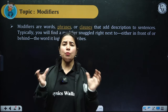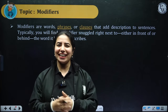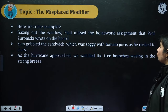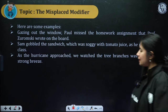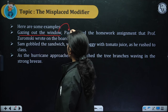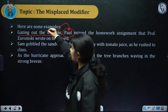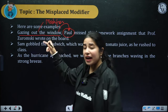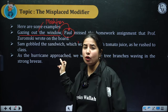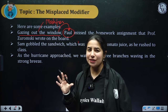I'll give you some examples. Usually, a modifier is kept near — nazdik — the word or phrase it is trying to explain or modify. Modifier ka placement usi word ke nazdik hota hai. For example: 'Gazing out the window, Paul missed the homework assignment that Professor Zurmoski wrote on the board.' Here, 'gazing out the window' is a modifier — it describes Paul, who is gazing out of the window. So this modifier is placed right next to the word it tends to modify or explain.